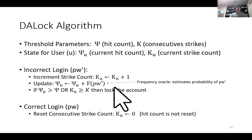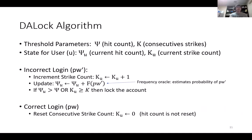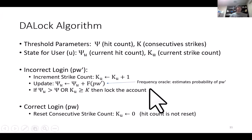More formally, the DA-Lock mechanism works as follows. We have two thresholds: the hit count threshold psi, and the consecutive strike count threshold k. For each user u, we keep track of the current hit count psi_u and the current strike count k_u. Whenever a user logs in with an incorrect password, we increment the consecutive strike count k_u, and we also update the hit count based on the estimated probability of the incorrect password pw'. We assume we have some frequency oracle which gives us an estimate of this incorrect password guess. On an incorrect login, if either the hit count threshold or the consecutive strike count threshold has been exceeded, we lock down the account. When the login attempt is correct, we reset the consecutive strike count parameter; however, the hit count parameter is not reset.